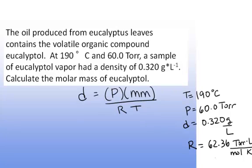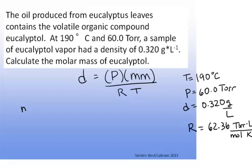I have four of my variables so I can solve for the fifth, which is the molar mass. Rearranging the equation: molar mass equals the density times the gas constant times the absolute temperature divided by the pressure, or mm = (d)(R)(T)/P.